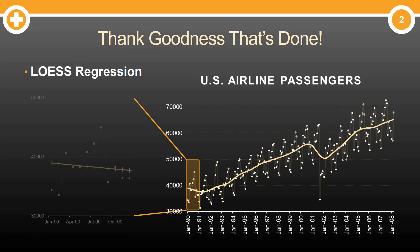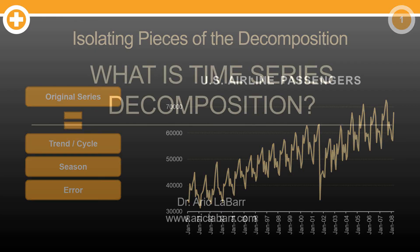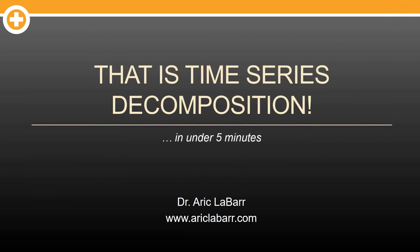Isolating pieces of the decomposition is important — that's how we explore our time series data. So again, we take our original time series, we break it down into trend, we break it down into season, we break it down into error. This is very important because some of the models we're going to be doing are going to be isolating these trends and seasons before we actually model them. So what is time series decomposition? That is time series decomposition as well as some LOESS regression in under five minutes.